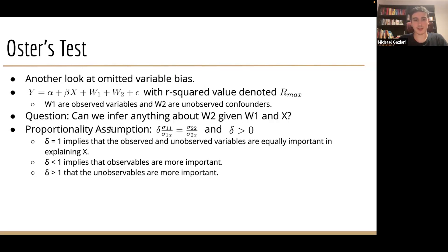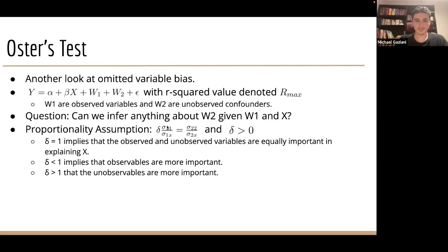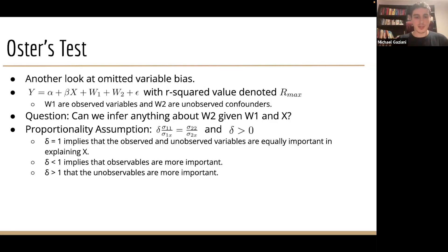The paper follows a proportionality assumption: the proportion of variance-covariance values from our known variables is proportional — scaled by delta — to the variance-covariance proportion of the unknown W2 variables. Delta equal to 1 implies the observed and unobserved variables are equally important in explaining X — sigma_11 / sigma_1X equals sigma_22 / sigma_2X — they play an equal role in explaining beta. If delta is less than 1, the observables are more important; if delta is greater than 1, the unobservable variables play a larger role.